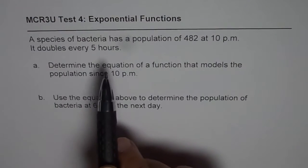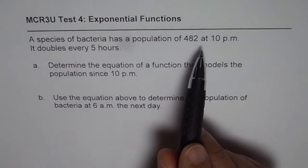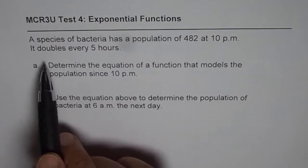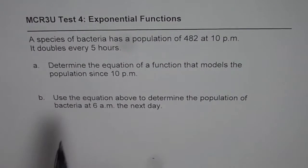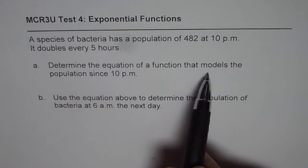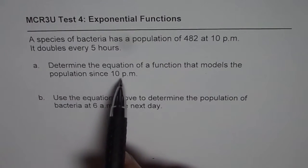A species of bacteria has a population of 482 at 10pm. It doubles every 5 hours. Determine the equation of a function that models the population since 10pm.